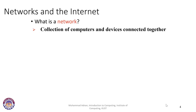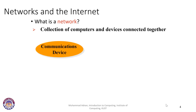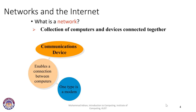Today we are going to discuss what networks and the internet are. Simply put, a network is when you connect two or more devices together. More formally, it is a collection of computers and other devices like servers, printers, routers, and switches connected together in order to transfer data, share information, and share hardware and software resources. There are different types of modems, switches, and routers that enable connections between computers.